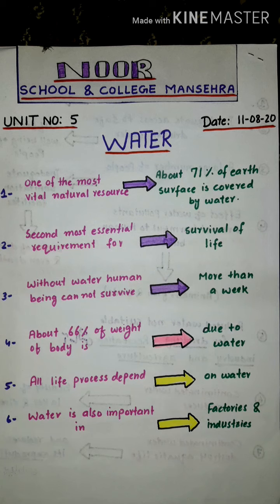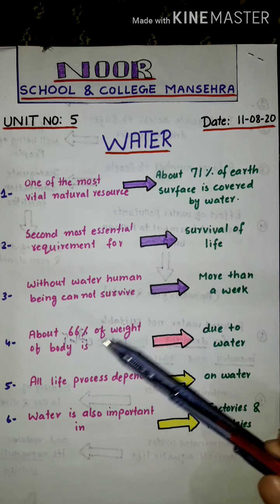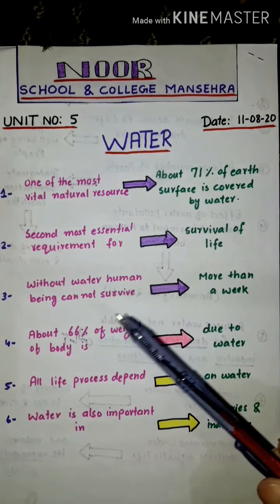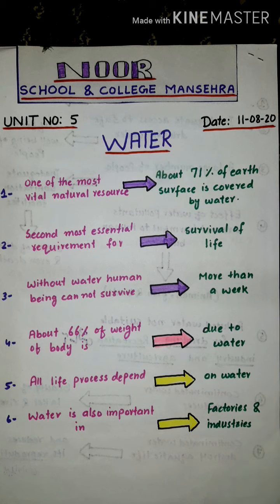Water is the second most essential requirement for survival of life after oxygen. Without water, human beings cannot survive more than a week. About 66 percent of the weight of the human body is due to water, and all life processes depend on water. Water is also important in factories and industries.